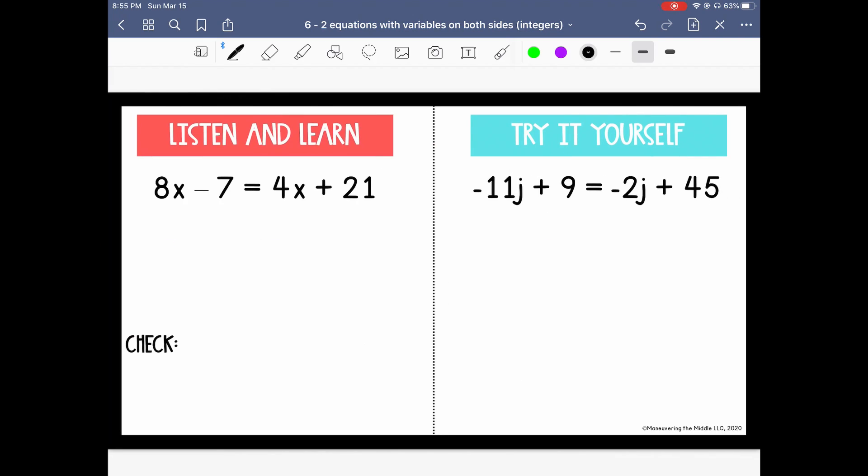Take a look at 8x minus 7 equals 4x plus 21. We need to decide if we want to collect our variables on the left and the right, or the right. Since 8x is larger than 4x, I want to take my variables to the left. It's just my preference to choose the side where the coefficient is greater.